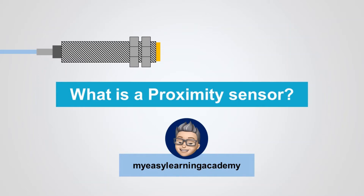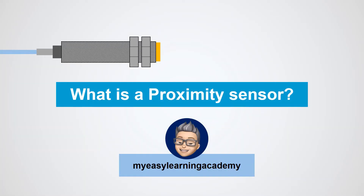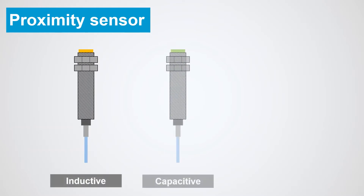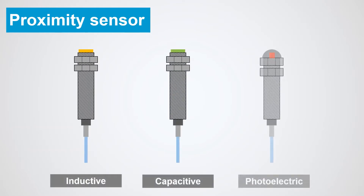Proximity sensors are pilot devices used to detect the presence of an object without making any physical contact, and are widely used in industrial automation for the detection of objects at a position. They are non-contact type solid-state electronic devices, normally of inductive, capacitive, or photoelectric type.